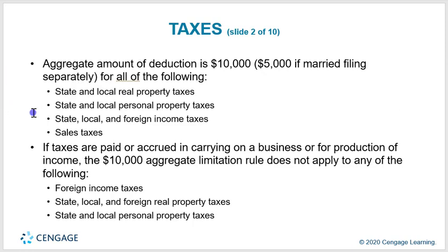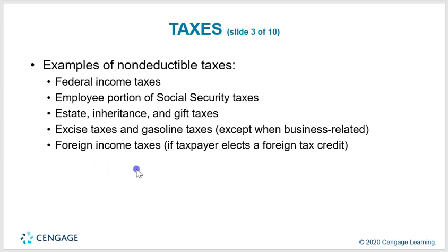The aggregate amount of deduction is capped at $10,000 for state and local real property tax, state and local personal property tax, and state and local income tax combined. The $10,000 limitation does not apply to taxes paid or accrued in carrying on a business or for production of income. Examples of non-deductible taxes include federal income tax, the employee portion of social security tax, estate, inheritance and gift taxes, excise taxes, and gasoline taxes.